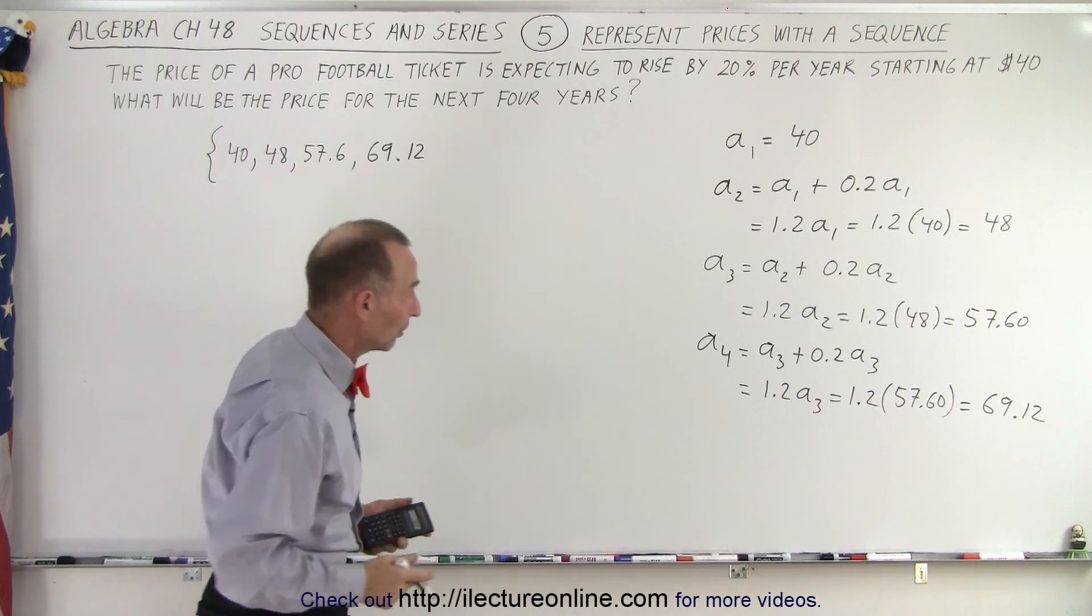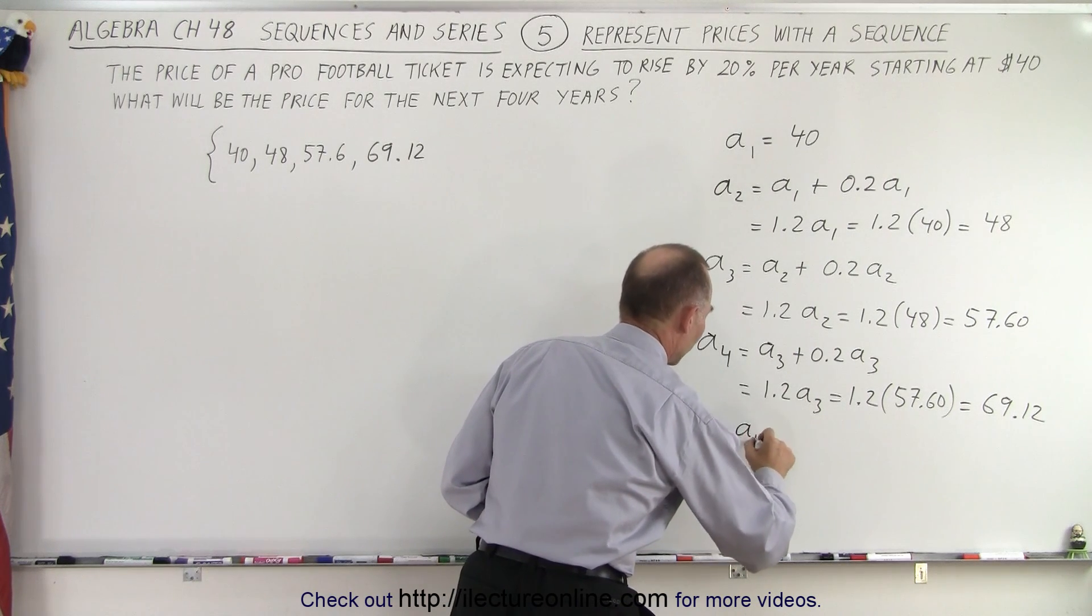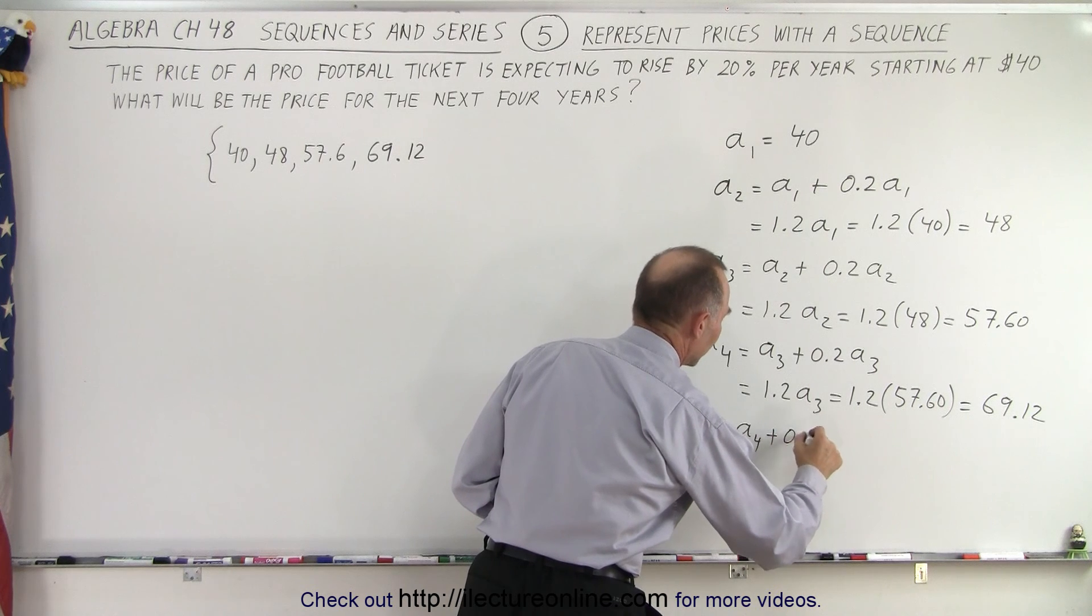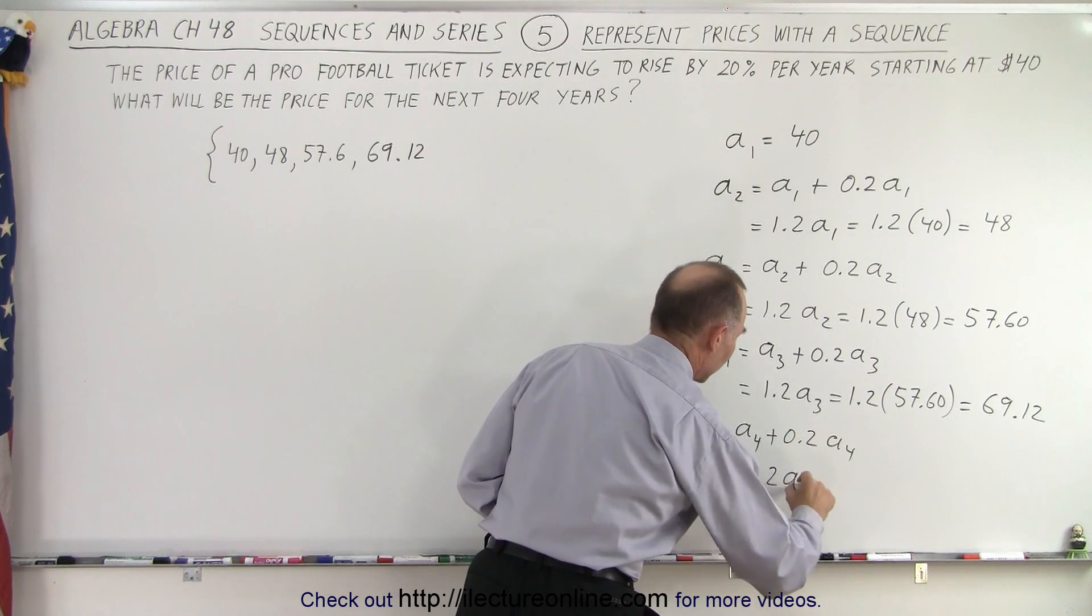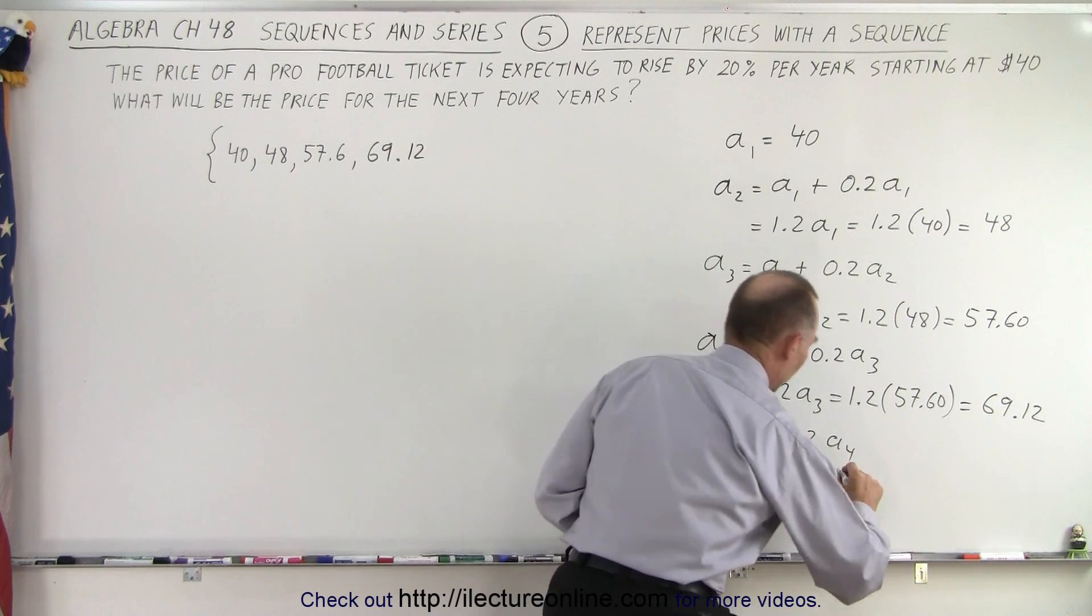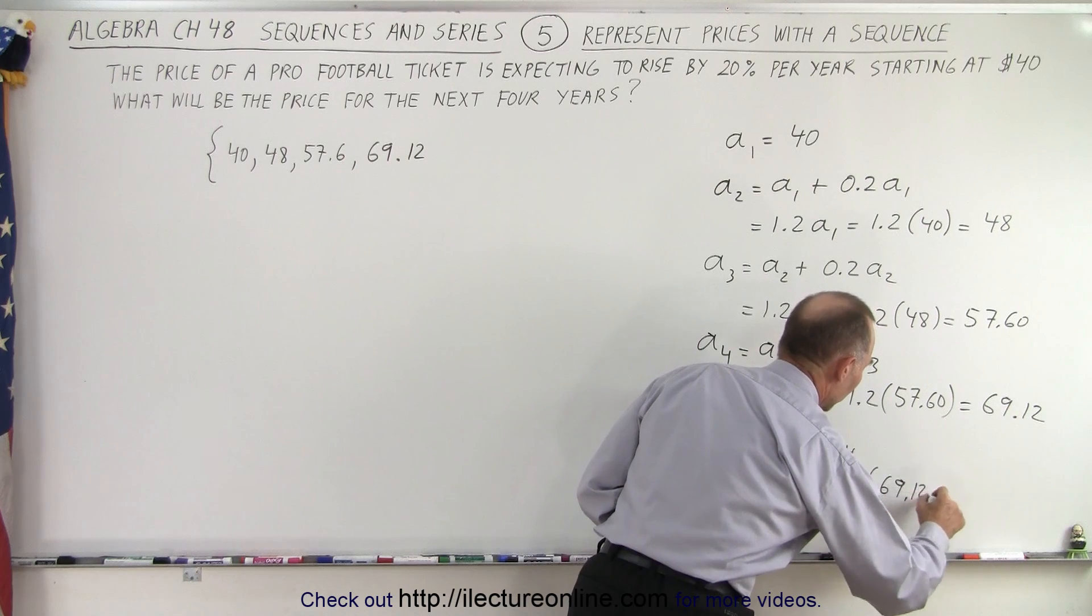And now let's do it one more time because they did ask for the next four. So now we get a₅, which is equal to a₄ plus another 20% of a₄, which is 1.2 times a₄, which is 1.2 times the previous price, 69.12.